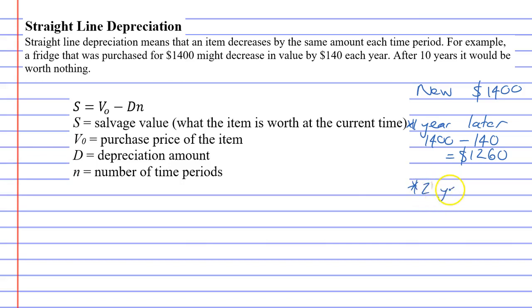Alright, what about two years later? What's it going to be worth then? Well, $1,260 minus another $140, which comes to $1,120. So if I want to sell it in the second year, I would only get about $1,120. And each year, it's just going to go down and down until about 10 years have passed. It will be worth nothing.